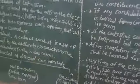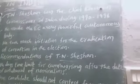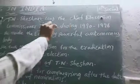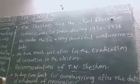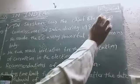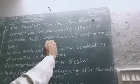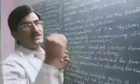Different types of elections will also be read in this class. T.N. Seshan was the Chief Election Commissioner of India during 1990 to 1996. He made the Election Commission a very powerful autonomous body. That is why he is one of the most important persons in elections.